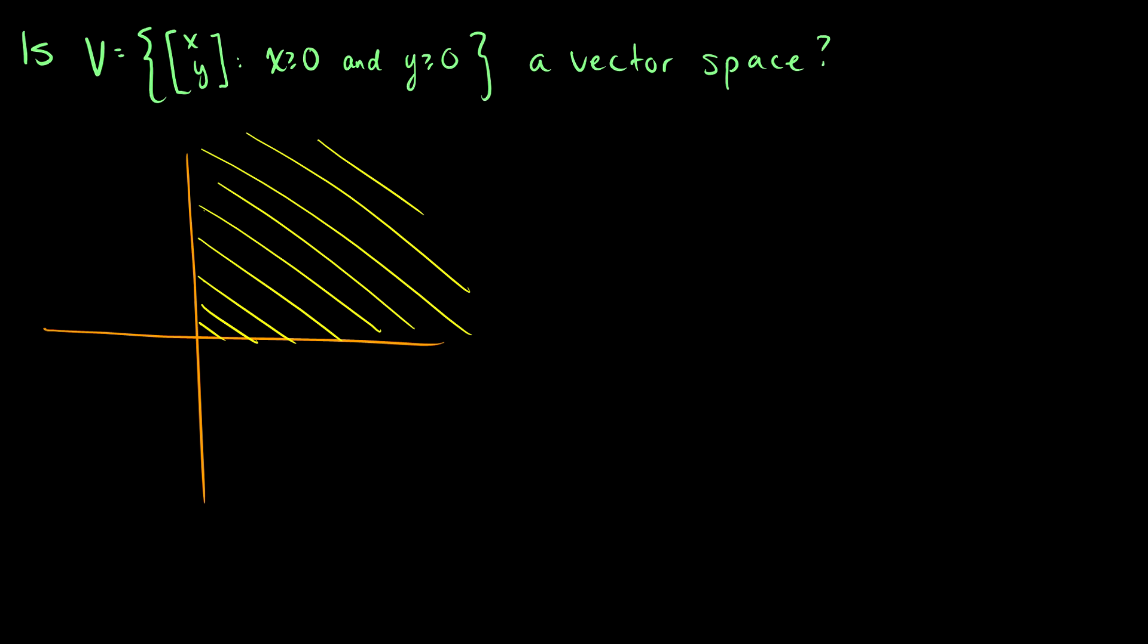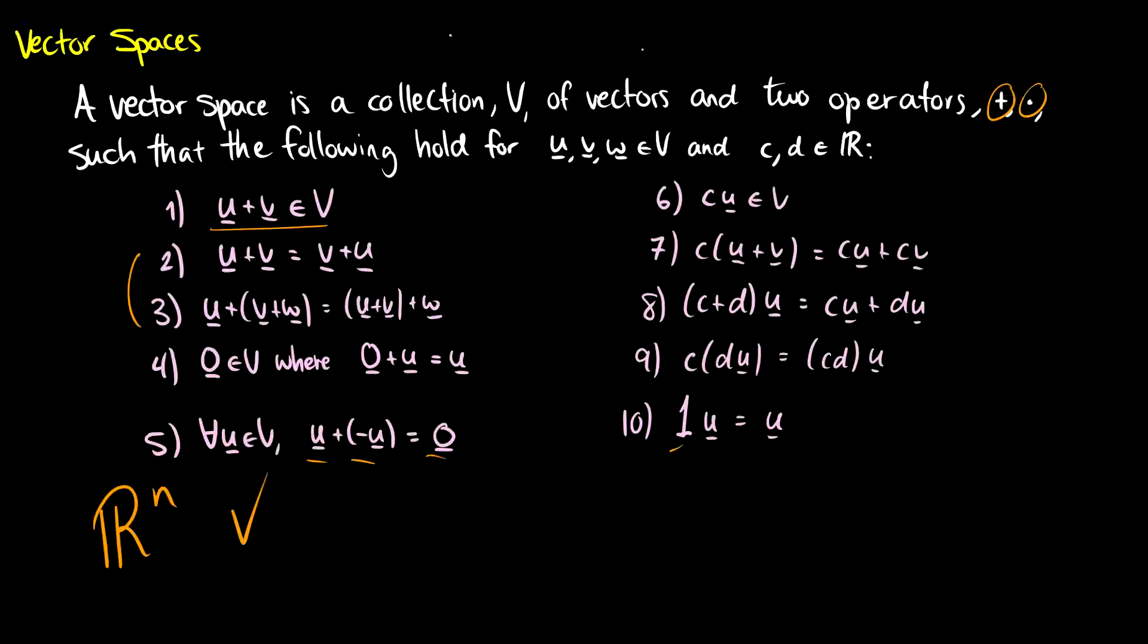So we have to ask ourselves, does it satisfy the axioms? And there's a ton of axioms here. So I'm going to circle the two that you should focus on when you're trying to disprove vector spaces. So here's one.